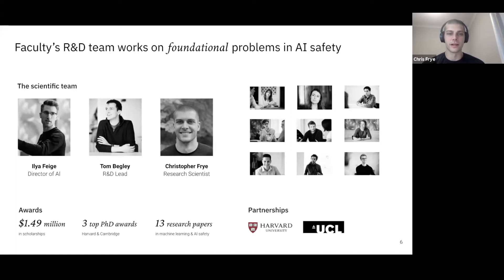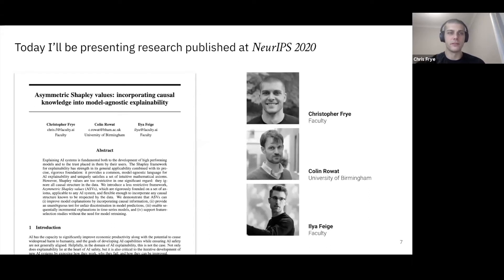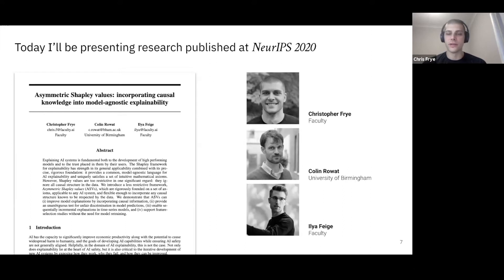I've focused primarily on explainability and robustness, but we've also worked on privacy and fairness as well. Explainability will be the main topic of today's talk. I should also mention that today I'll be presenting research published at NeurIPS last year on asymmetric Shapley values — work done with someone outside of Faculty named Colin Rowett, who is an economist at the University of Birmingham.